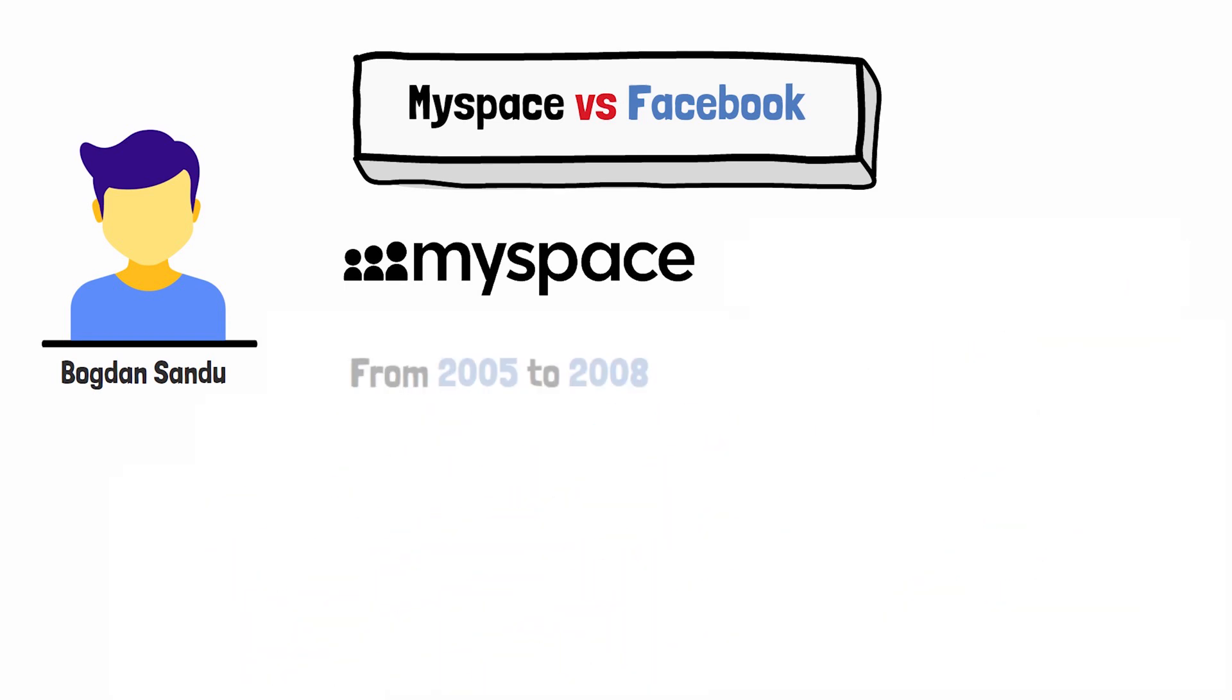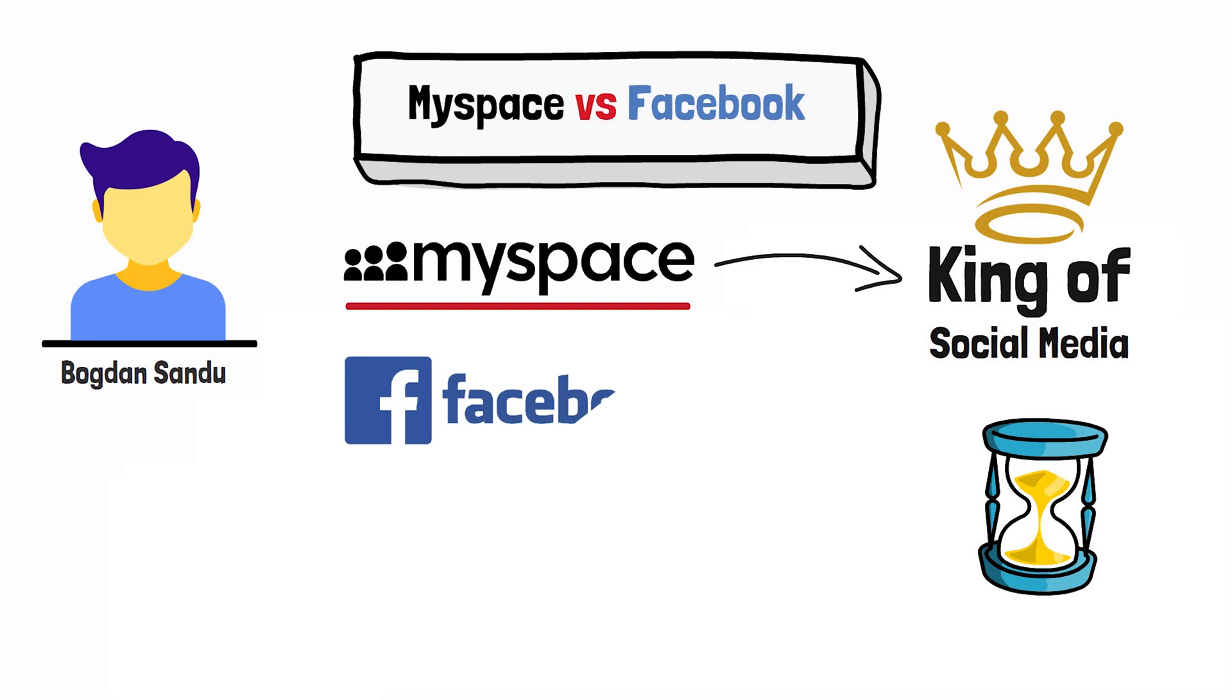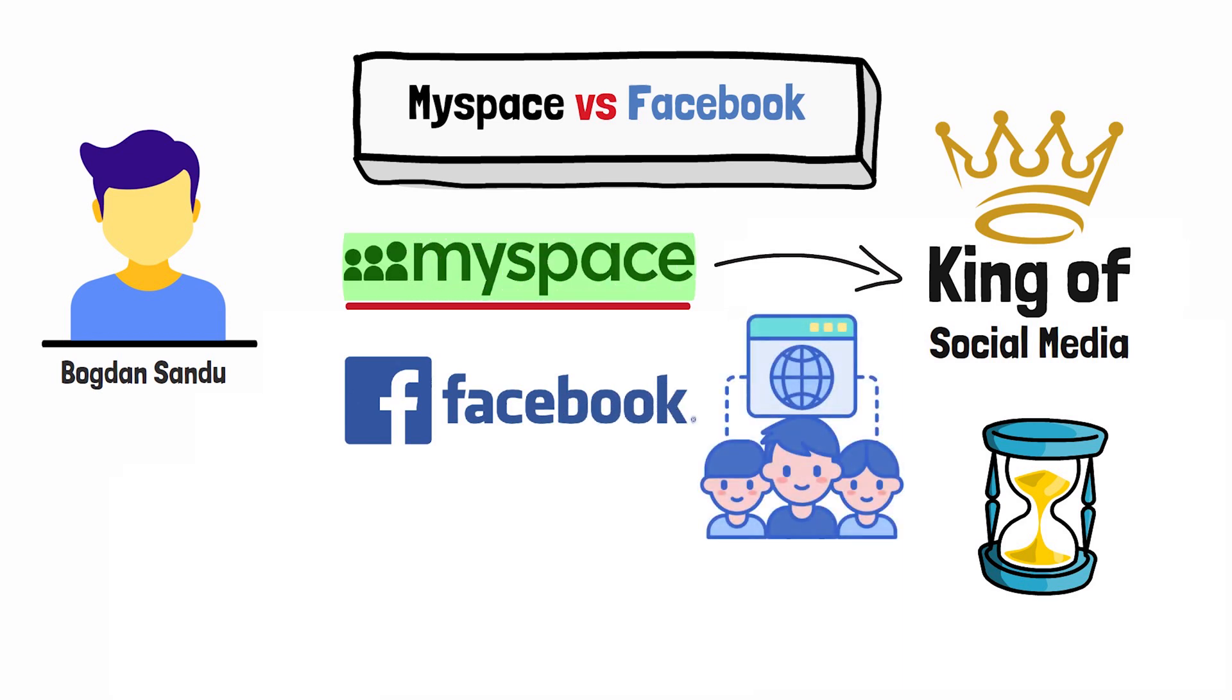From 2005 to 2008, MySpace was the largest social networking site in the world. MySpace was the king of social media, but a couple years later, Facebook would dominate the industry, eventually surpassing MySpace in total number of users by 2008.